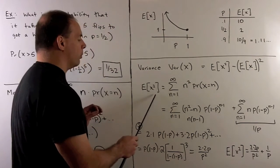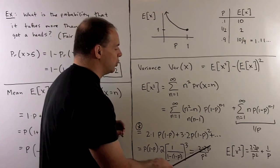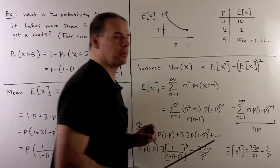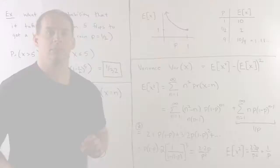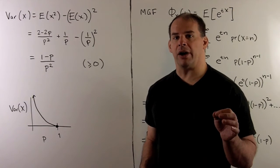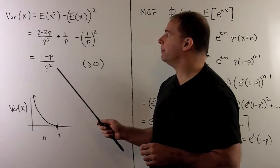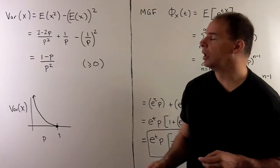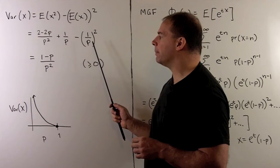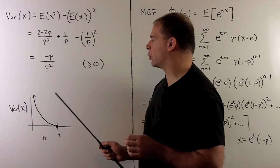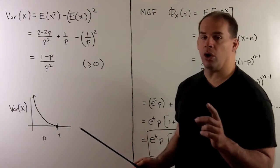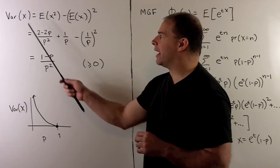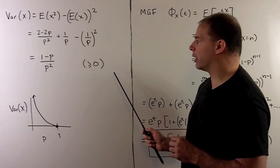For the variance, we take the second moment, subtract our mean squared, and take the difference. Putting everything over a common denominator, we get (1 minus P) over P squared. Since P is between 0 and 1 inclusive, we verify that the variance is always greater than or equal to 0.